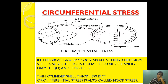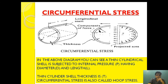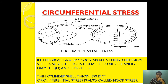So first let us see what is circumferential stress. Circumferential stress — as shown in the diagram, a thin cylindrical vessel is subjected to internal pressure P. This is the thin cylindrical vessel, having a diameter D, a length L, and a thickness T, subjected to a pressure P. The pressure is acting all around the surfaces. This pressure acting from inside to outside direction — or outside to inside — is called circumferential stress, because it is acting all through the circumference of the thin cylindrical vessel.